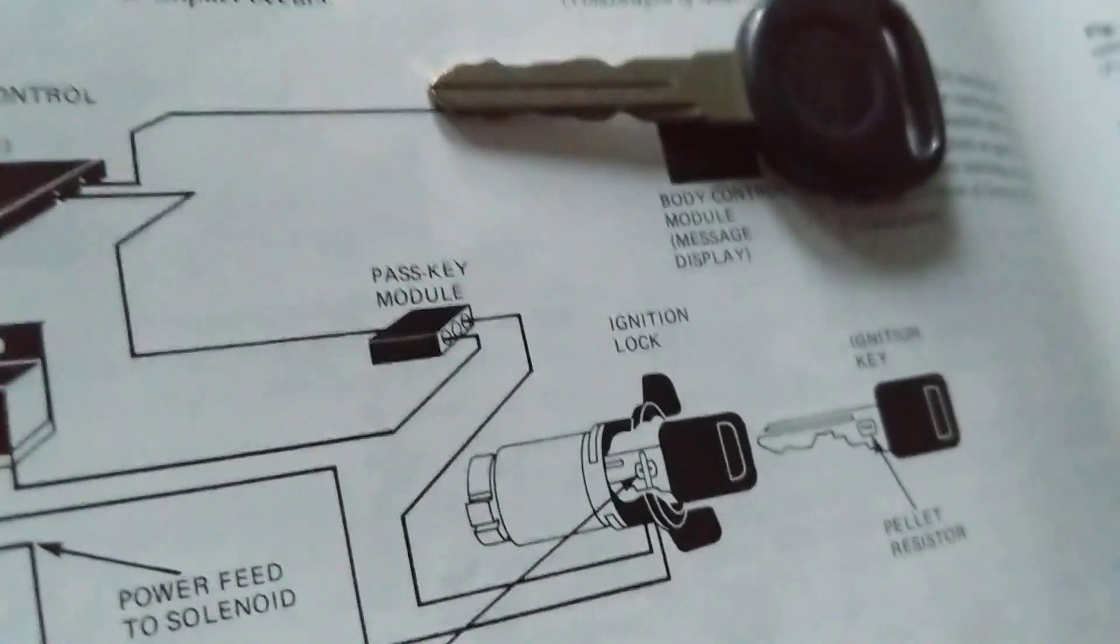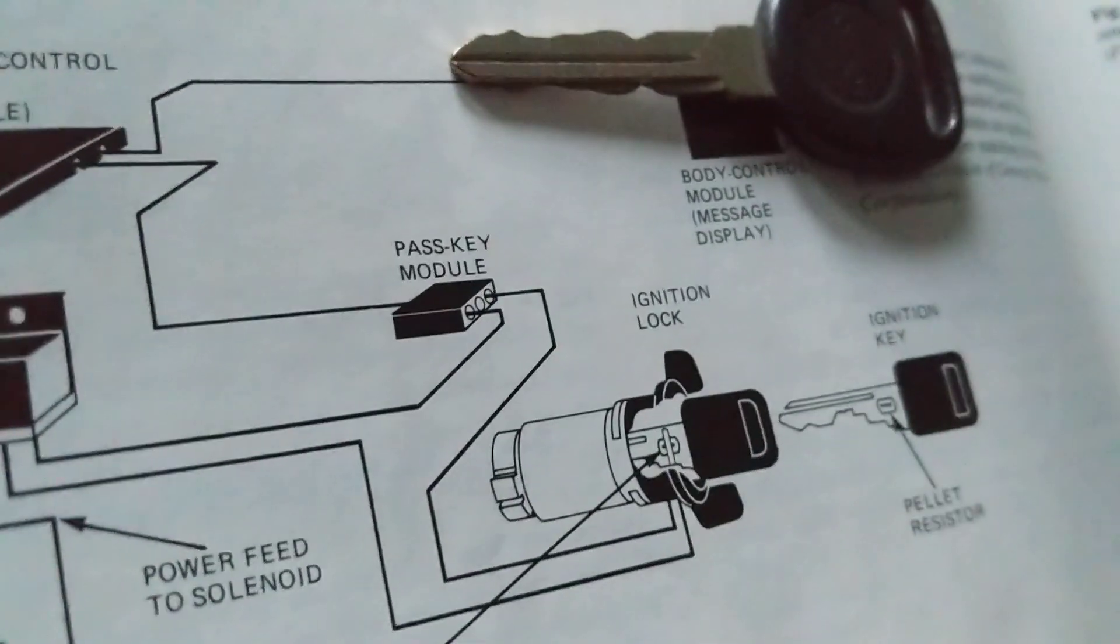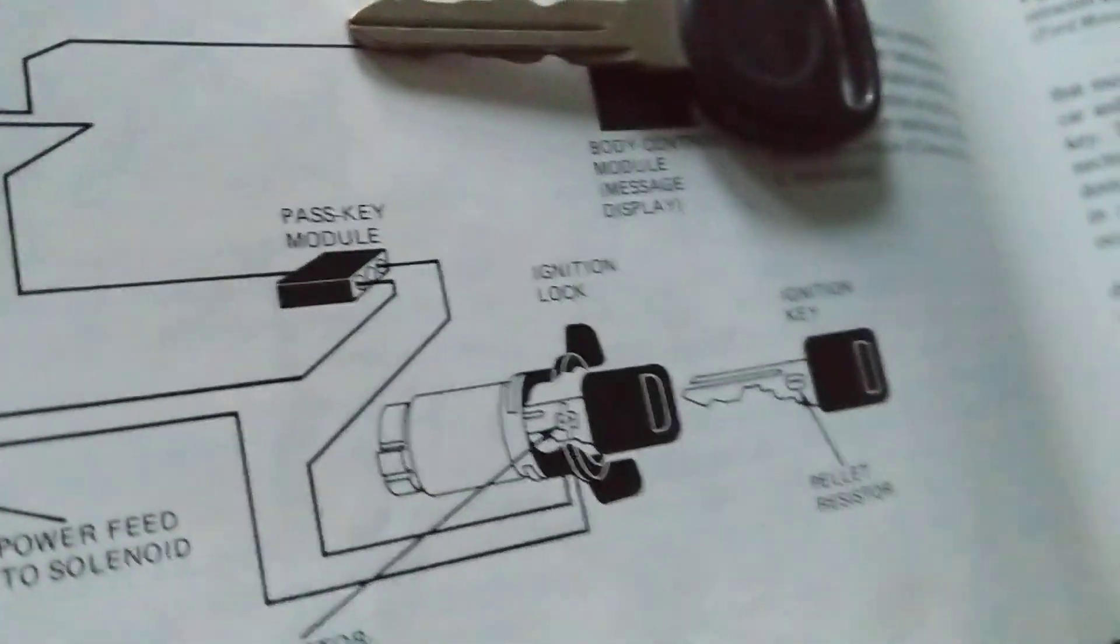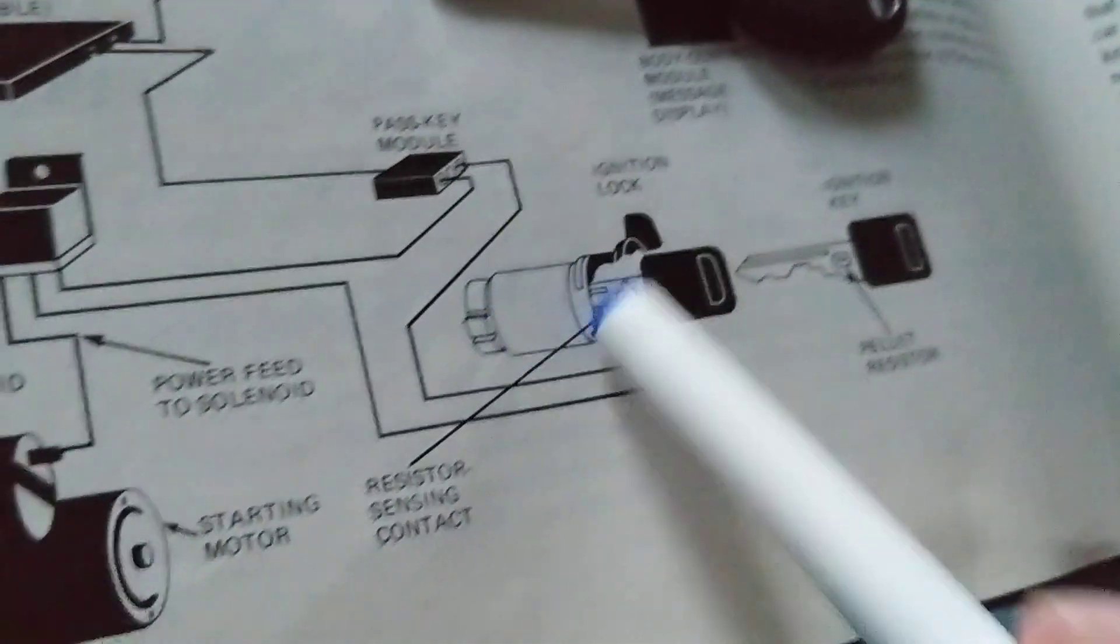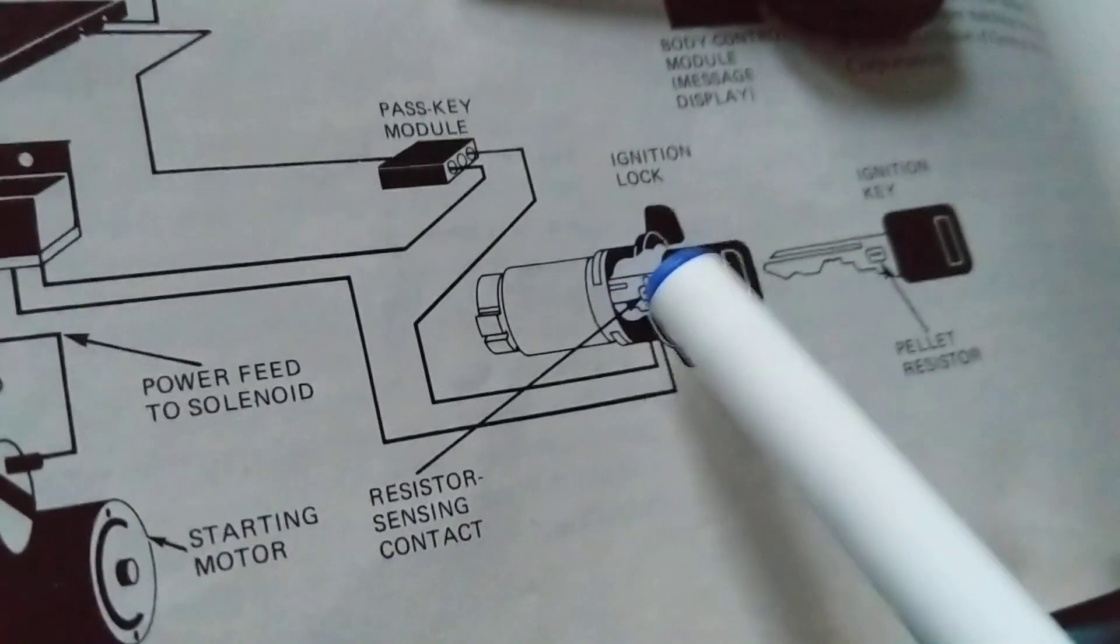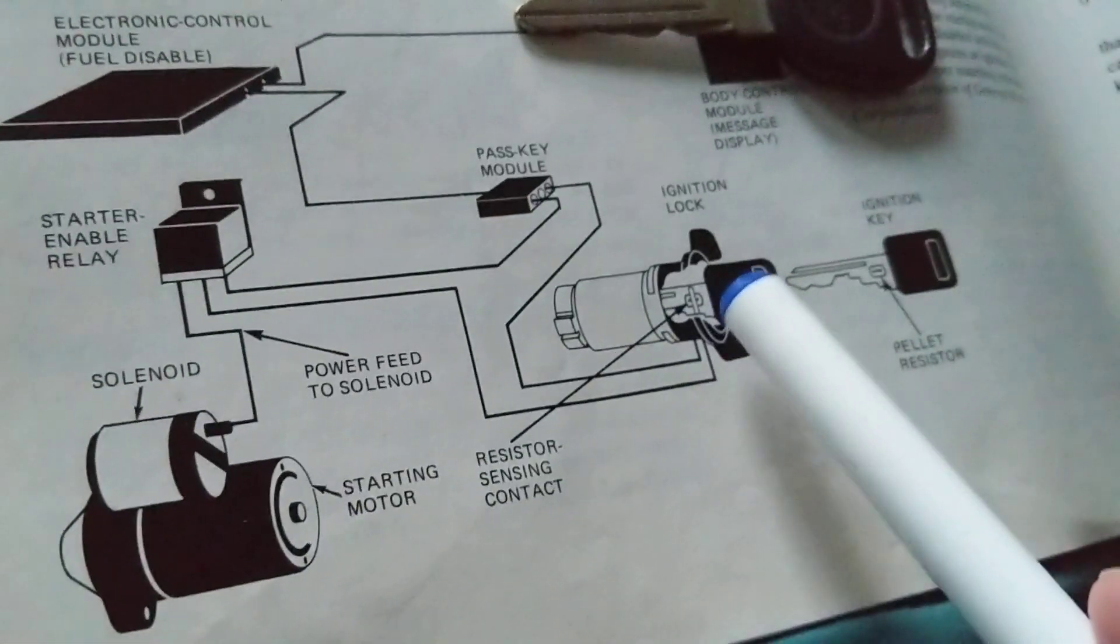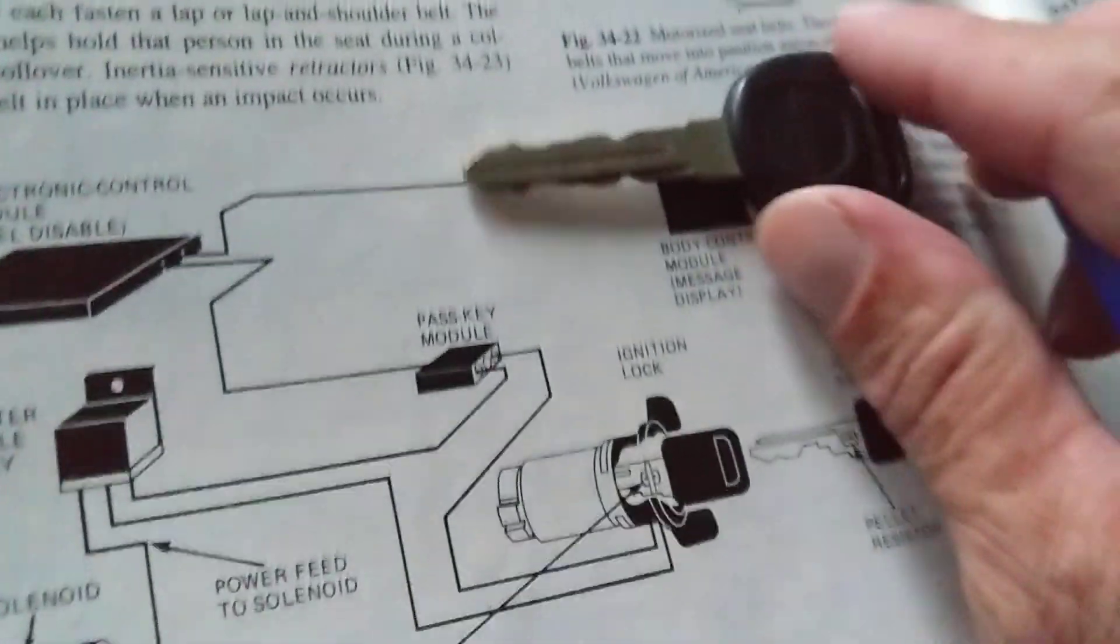Any value that matched, you'll be able to start your vehicle. If it didn't match, you cannot start the vehicle. So this is the cylinder, the lock cylinder over here. This is the resistor and there's a sensing contact.